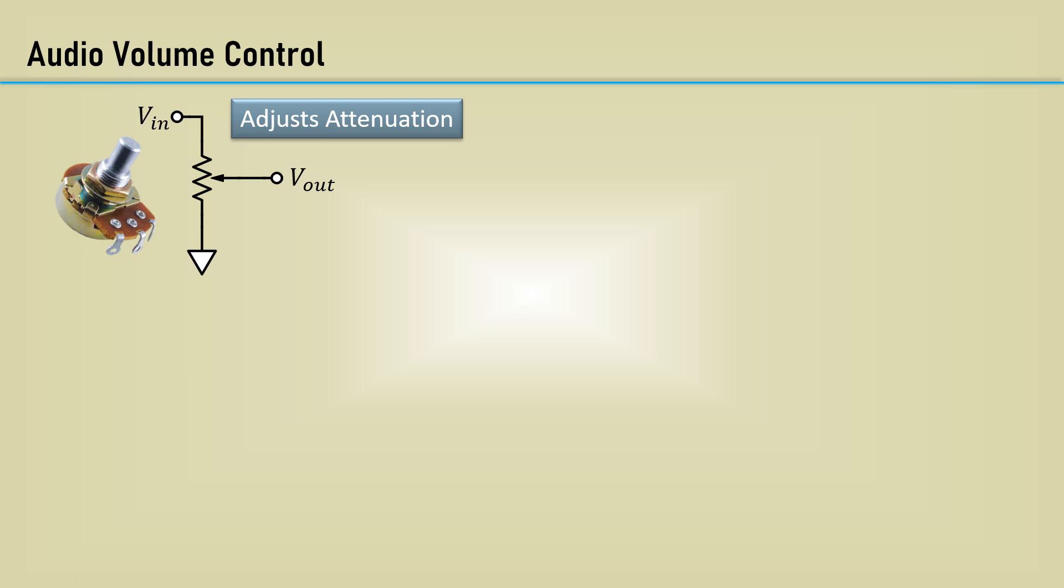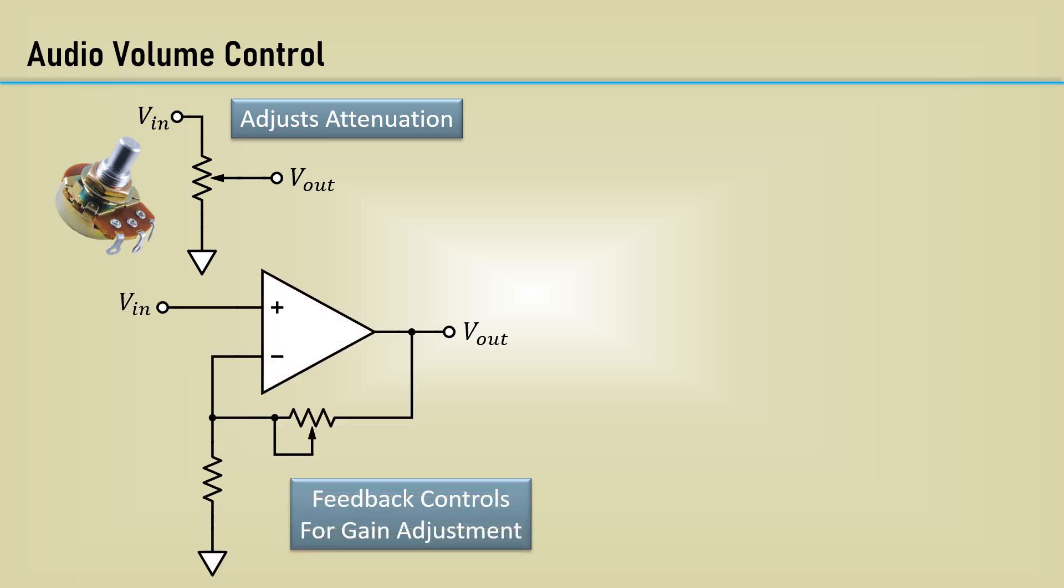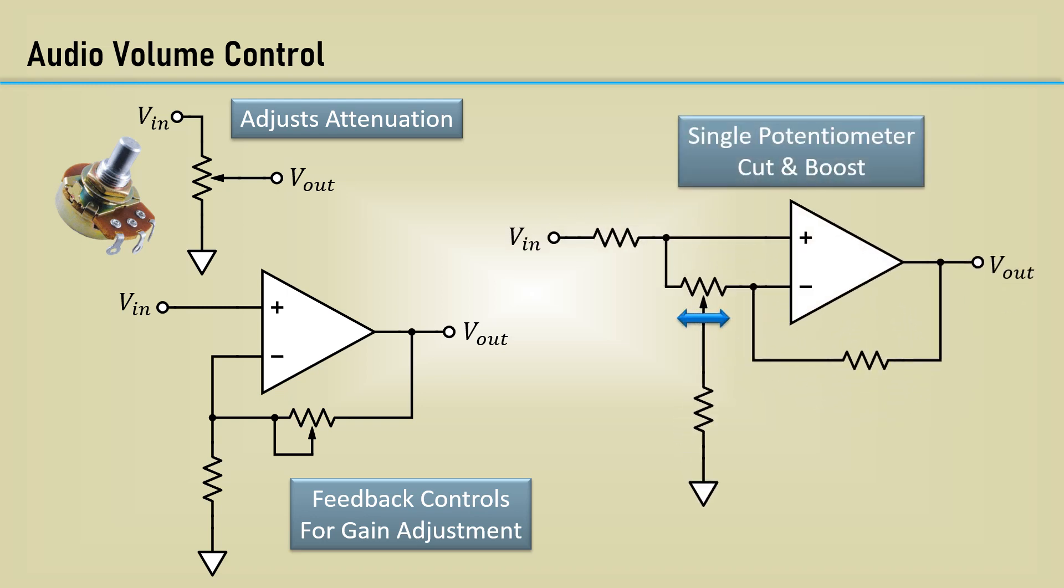To get gain control, you need an amplifier whose gain can be varied. This could be accomplished by varying the feedback resistors with a potentiometer. Some brilliant person came up with a way to have gain and attenuation using a single potentiometer.